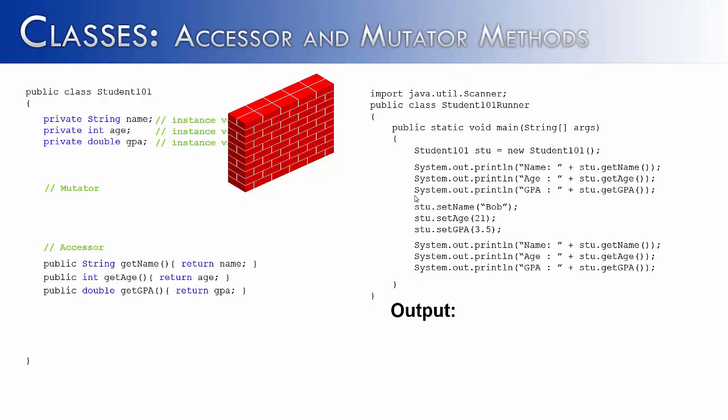If we kept the values as before, name, age, and GPA, with direct access, we couldn't delineate between just granting read access and just granting writing access. But with mutators and accessors, we can do exactly that.